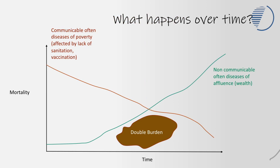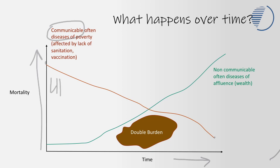Geographers are interested in patterns and how they change over time. On the y-axis we have mortality rate and on the x-axis we have time. Looking at the red line, which shows communicable diseases, you can see these start high and then decrease over time. Very few countries in the world remain as LIDC countries, classified as low income by the World Bank.